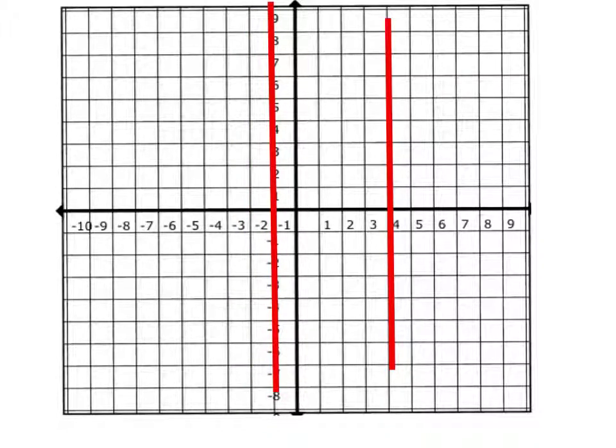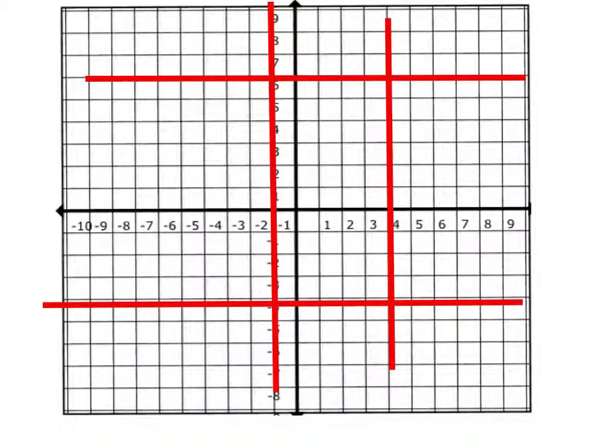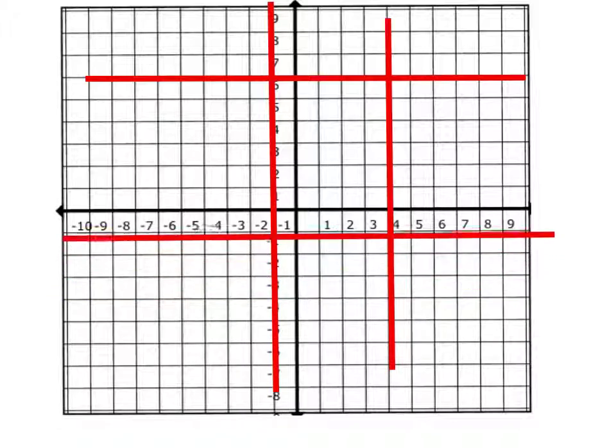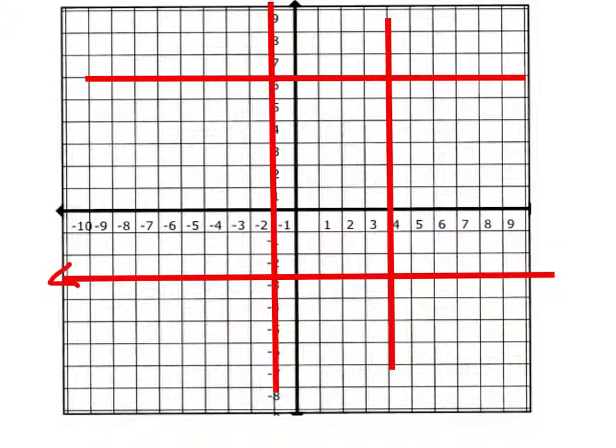Now we have to go to y equals 6. So we'll go this way, like that. And y equals 6 is right here. Then we're going to have y equals negative 3, left to right. And that's going to go right here. Don't forget the lines on everything.